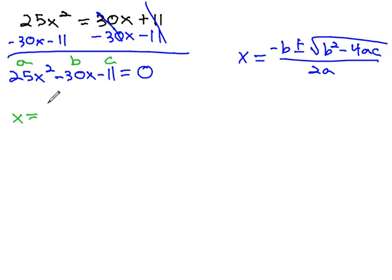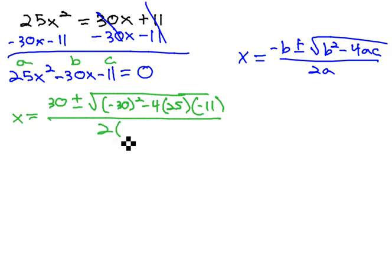So plugging into the quadratic formula, x is equal to the opposite of b, which makes it positive 30, plus or minus the square root of b, which is negative 30 squared, minus 4a, which is 25, times c, which is negative 11, all over 2a, which is 25.